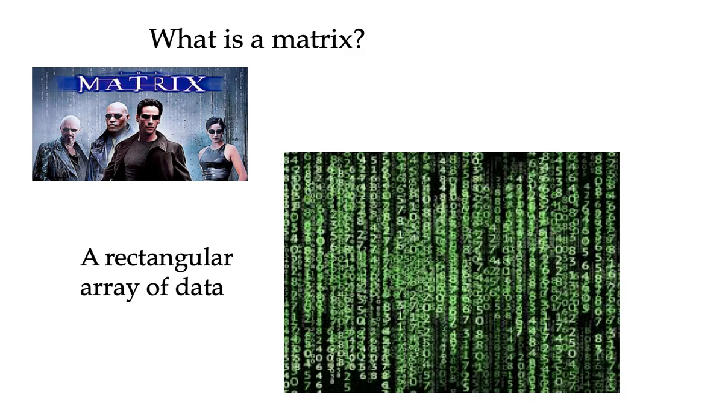1999 it came out, Keanu Reeves, and it brought into public awareness the word matrix. Until then, it was mostly a mathematical idea, and the green strings of numbers were a feature of the movie. Effectively, it's talking about computer systems and the idea of living in a computer-generated world, and the matrix was simply all the code that made this artificial world seem real.